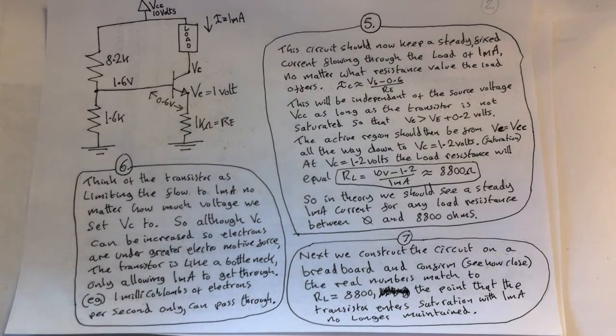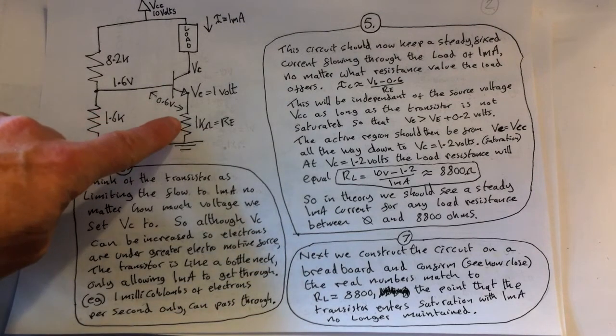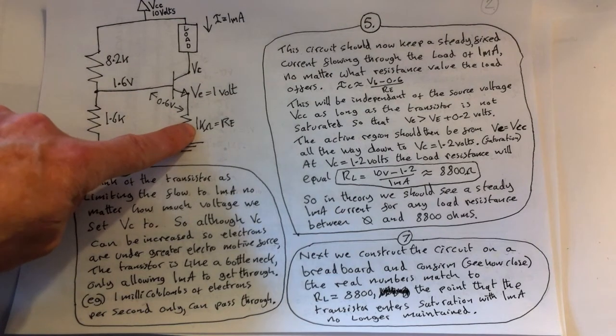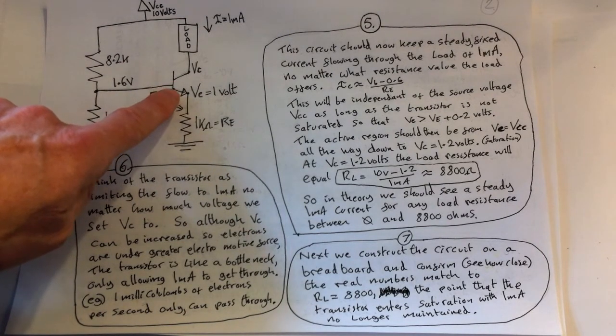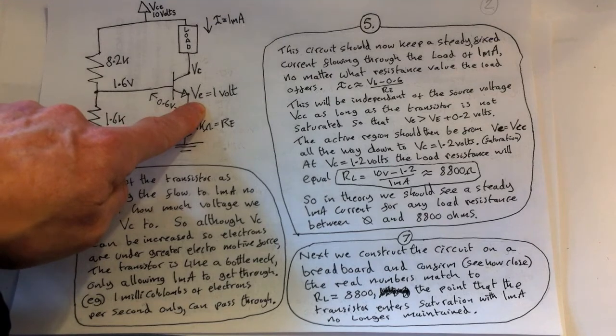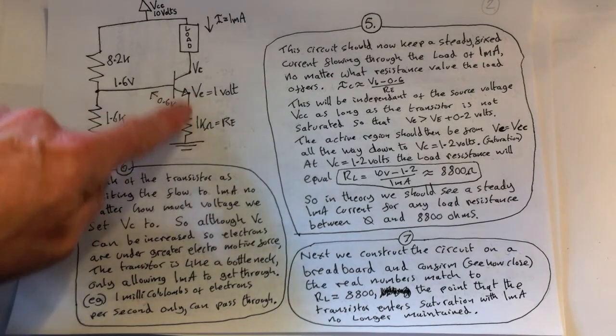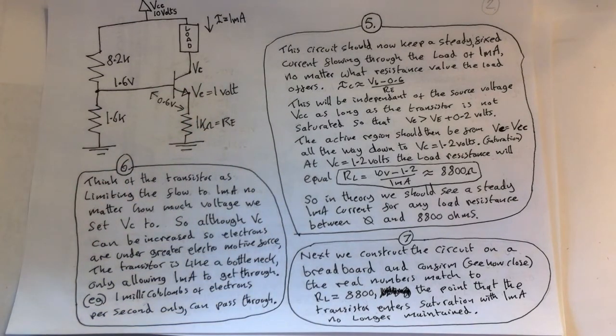It's a bottleneck and it's only allowing one current to go through and that's 1 milliamp. That is again defined, the valve if you like is defined by the emitter resistor here and the voltage drop at the emitter. So defining those two fixes the current.